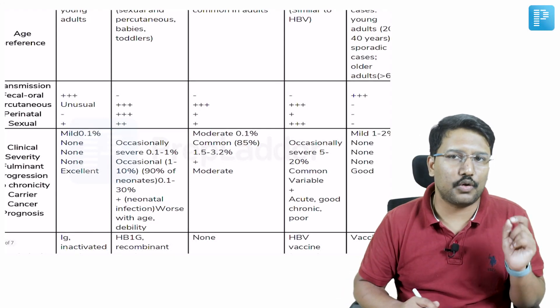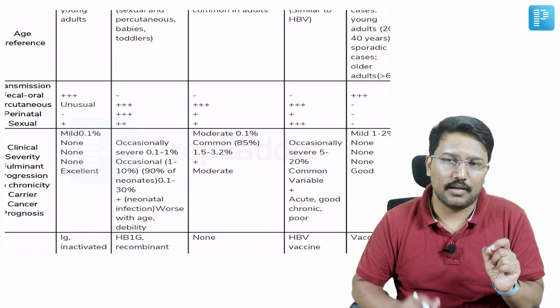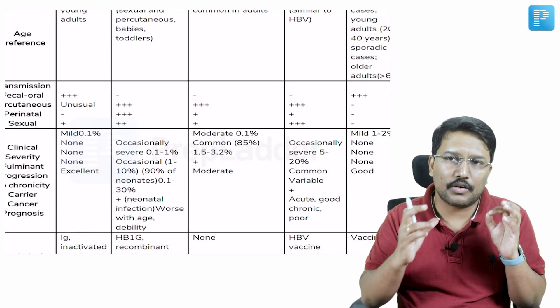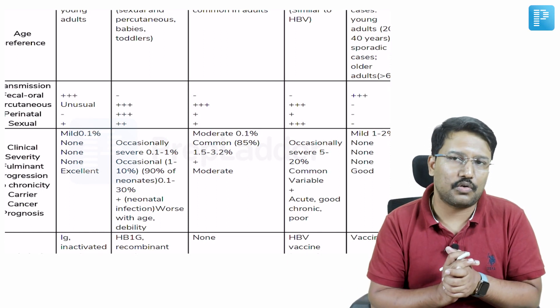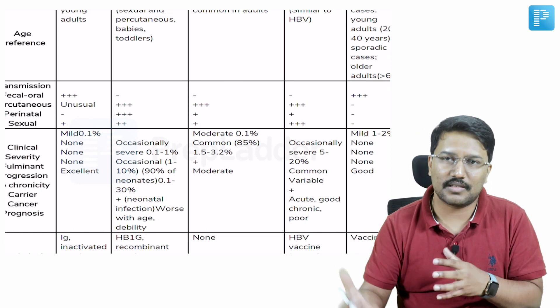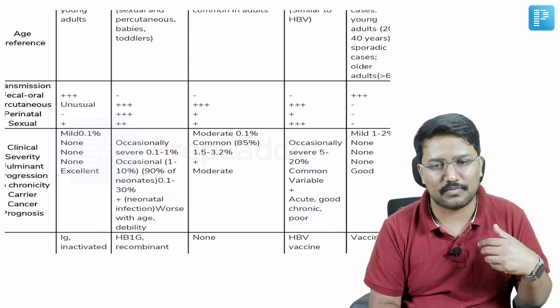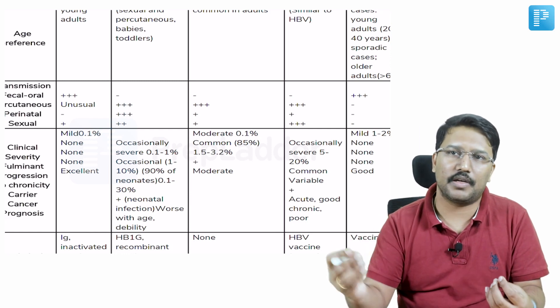In terms of severity, you have to remember that HDV and HBV co-infection are generally not known to be very severe, and the chronicity risk is very less because what is the fate of HBV will be the fate of HDV.